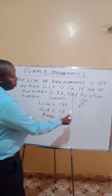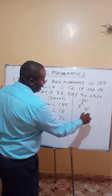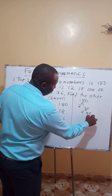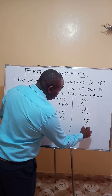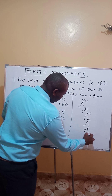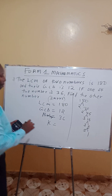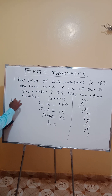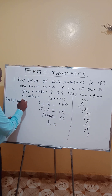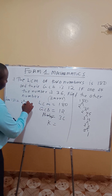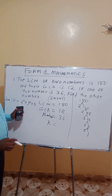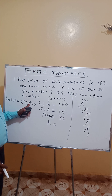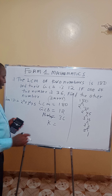You factorize 180 in terms of its prime factors. 180 divided by 2 is 90, divided by 2 is 45, divided by 3 is 15, divided by 3 is 5, divided by 5 is 1. So 180 in prime factors is 2 power 2 times 3 power 2 times 5. That is: 4 times 9 times 5 equals 180.